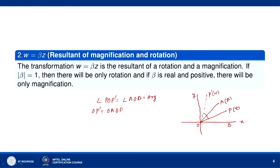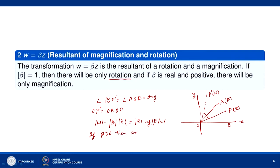It is a resultant of rotation and magnification. If |β| = 1, then |w| = |β||z| = |z|, so there is no magnification — only rotation. If β is real and positive, then arg(β) = 0, so there is no rotation — only magnification. The vector OP will simply be magnified with no rotation.